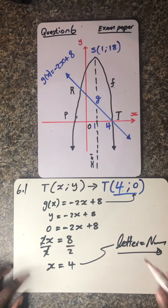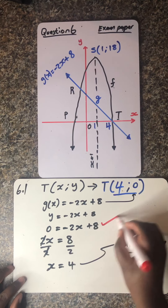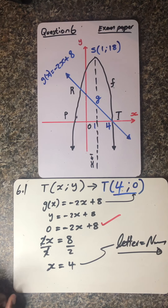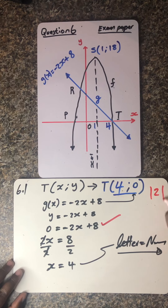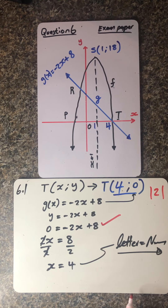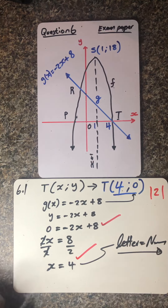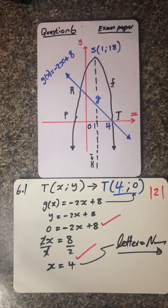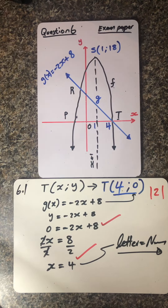Before I forget guys, for you to equate that equation to 0, we give you a mark. Remember, this question was allocated two marks. So we give you a mark for equating it to 0. And then from there, we also give you a mark for your final answer. Please do make sure that you do not lose these free marks.